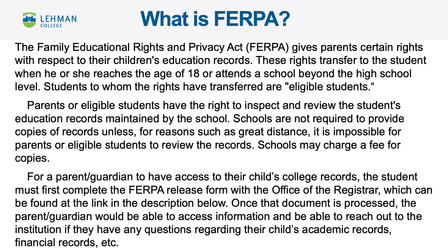Parents, guardians, or eligible students have the right to inspect and review the student's educational records maintained by the school. Schools are not required to provide copies of records unless, for reasons such as great distance, it is impossible for parents, guardians, or eligible students to review the records. Schools may charge a fee for these copies. For a parent or guardian to have access to their dependent's college records, the student must first complete the FERPA release form with the Office of the Registrar, which can be found in the description box below.